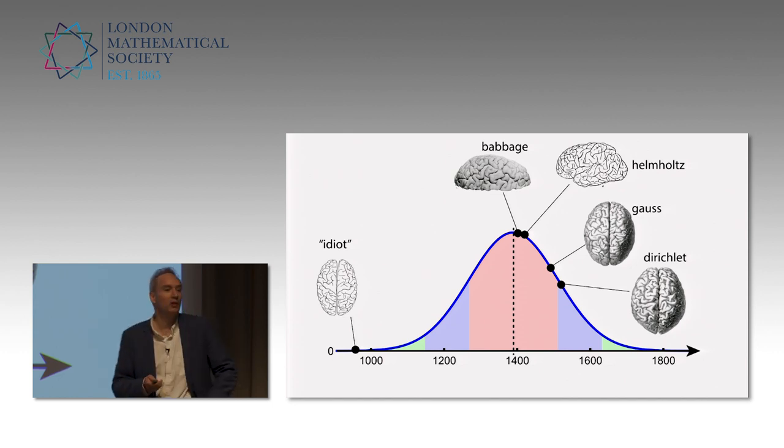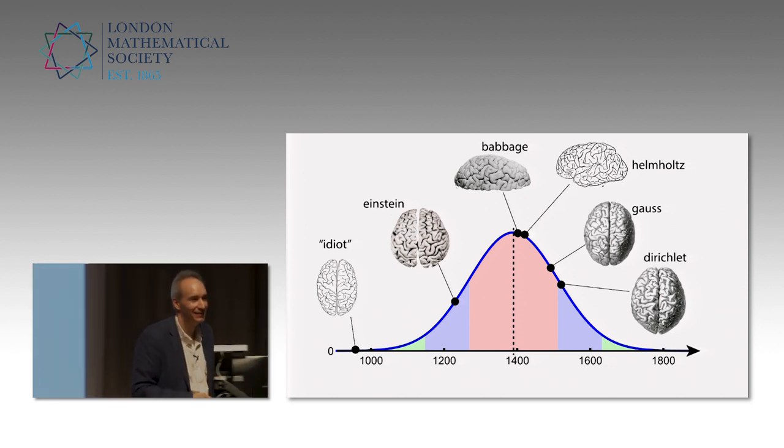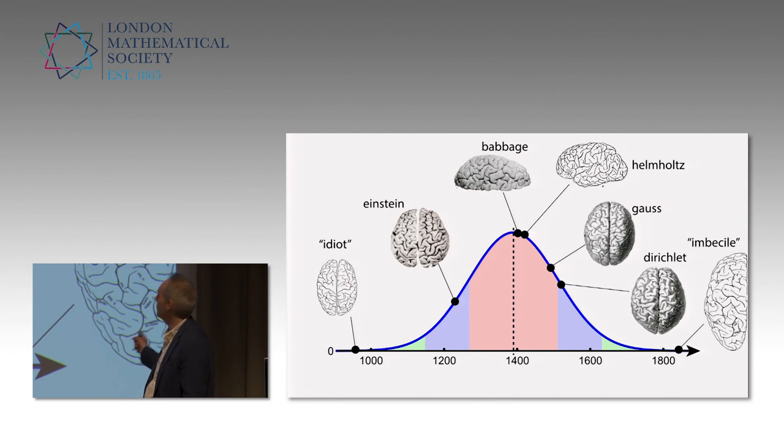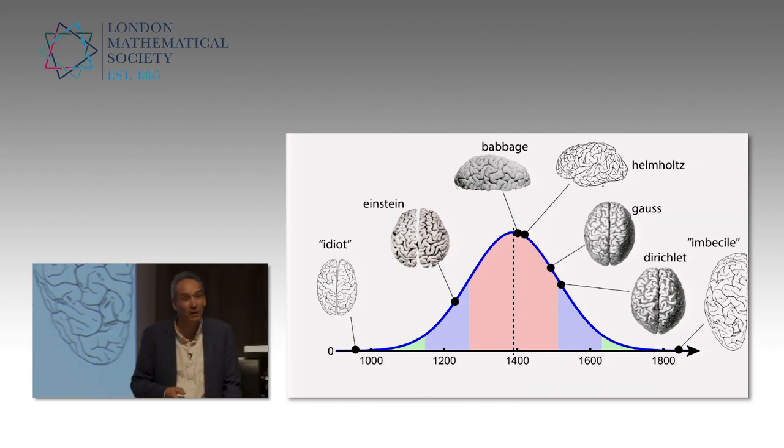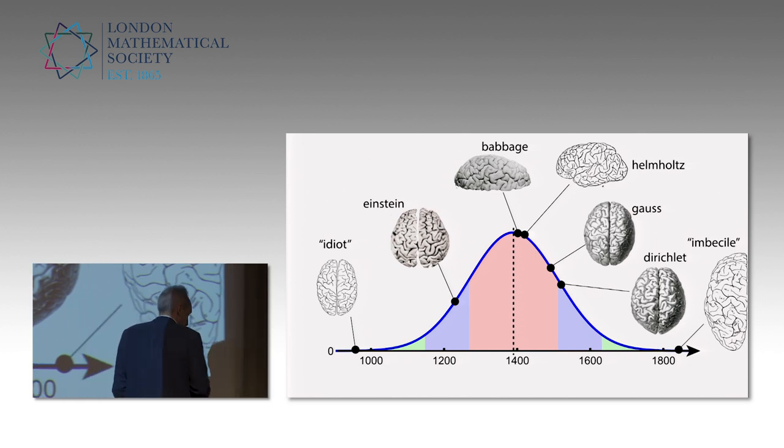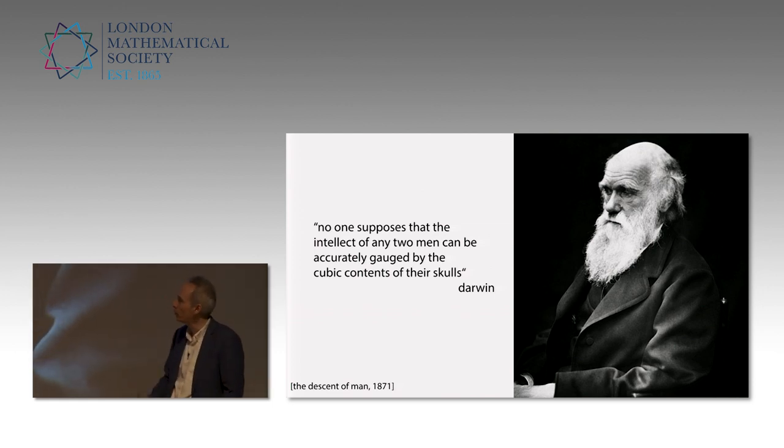Let's look at the genius of the 20th century: Einstein. Where does Einstein fall? 1,230 grams, not exactly the giant of brain power. But let's look at very big brains, pathology associated with big brain, and this is an imbecile, very large. Clearly, we have to do something else. This is not very good. It was fully understood by Darwin in 1871 when he wrote The Descent of Man. He says, no one suppose that the intellect of any two men can be accurately gauged by the cubic content of their skulls.